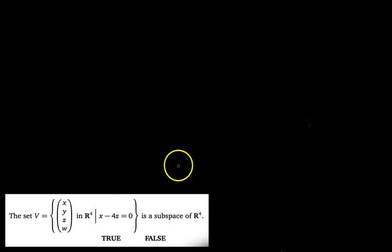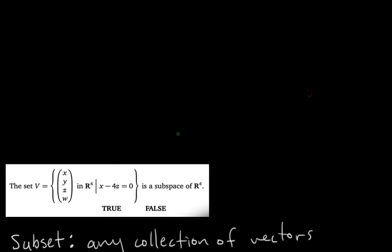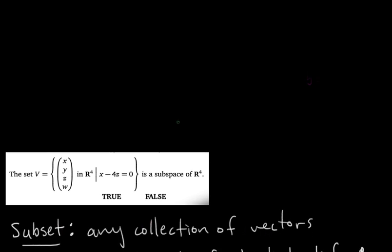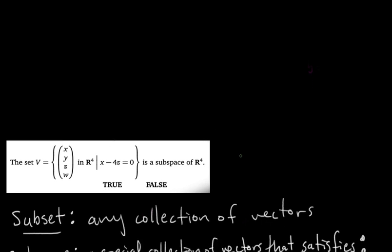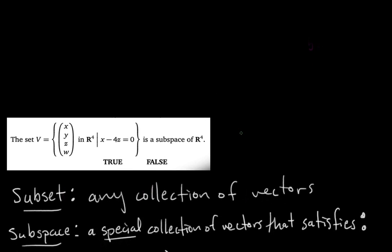Let's talk about what a subspace is. First, let's define a subset — that's just any collection of vectors. There's nothing special about that; it's just a collection of vectors. But once you start talking about subspaces, you have to satisfy some special conditions. So a subspace is just a special subset.